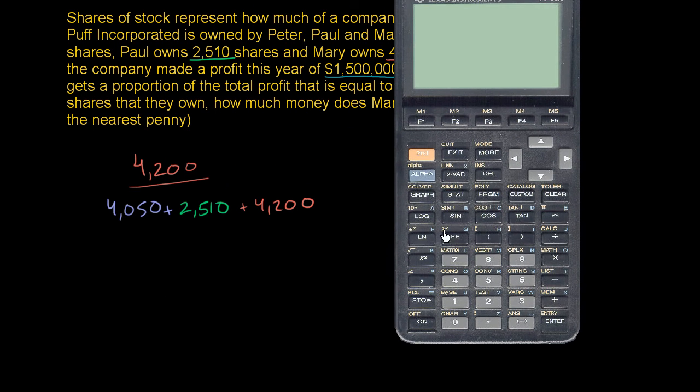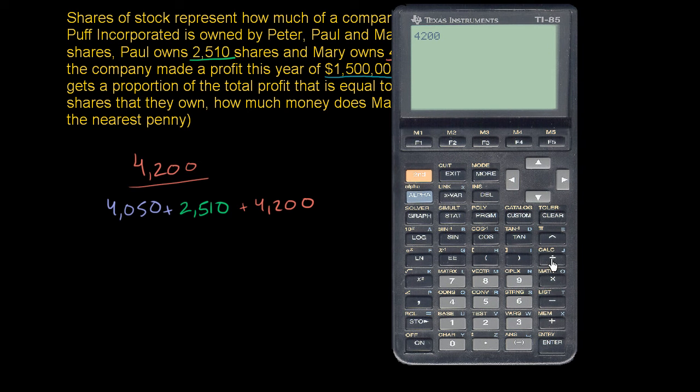So let's figure out this with a calculator. This is going to be 4,200 divided by 4,050 plus 2,510 plus 4,200.